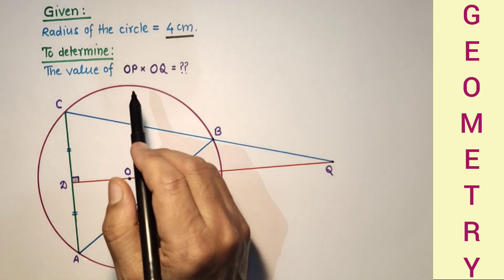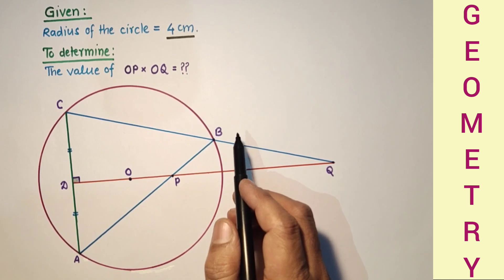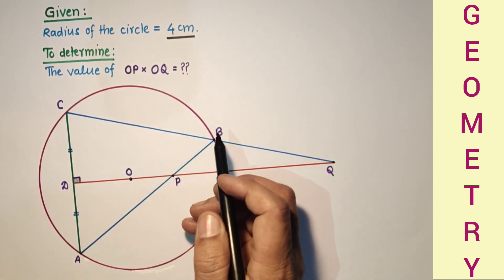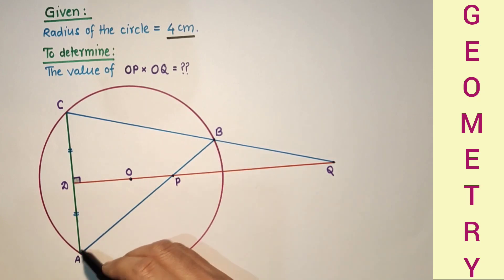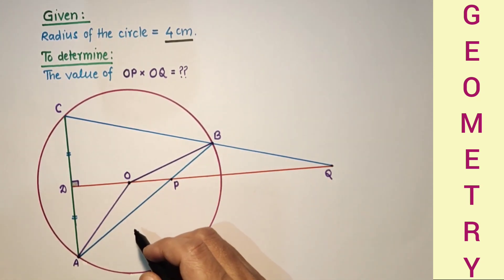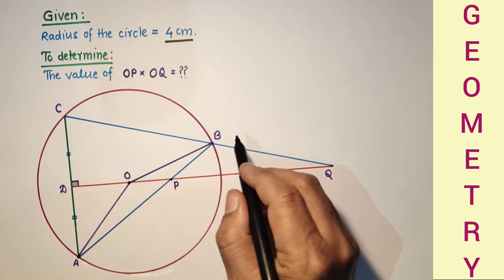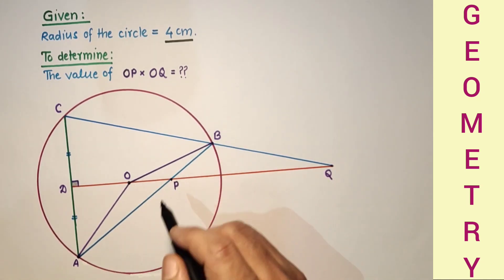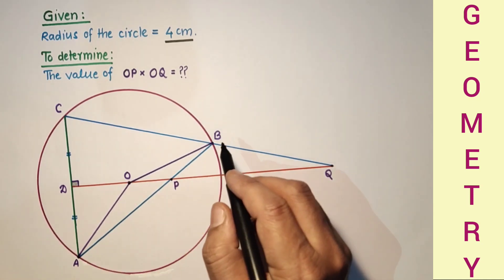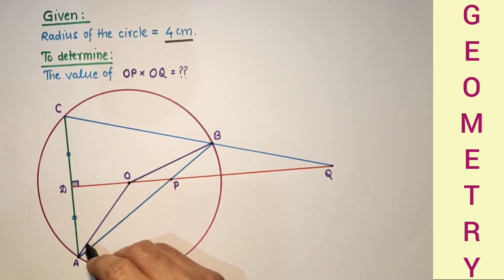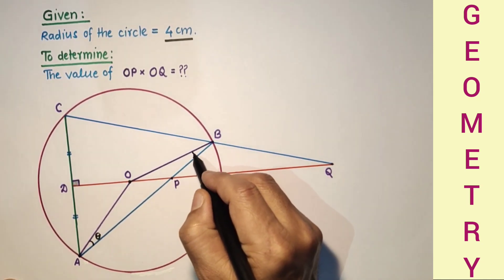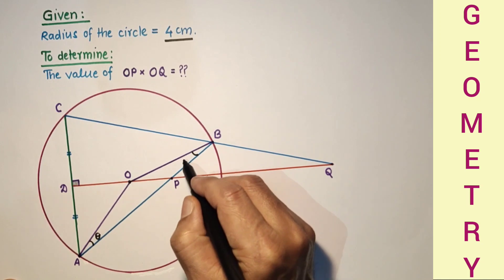To find the value of the product OP and OQ, we need some constructions. Join OB and join OA — both OB and OA are radii, and the length of this radius is 4 cm. Since OA and OB are equal radii, if this angle is theta, then this angle will also be theta — these are base angles of an isosceles triangle.